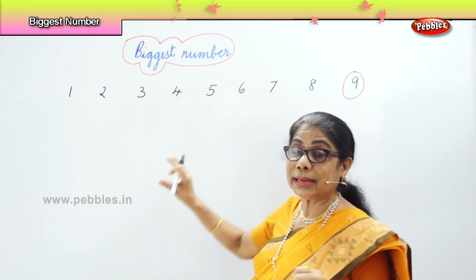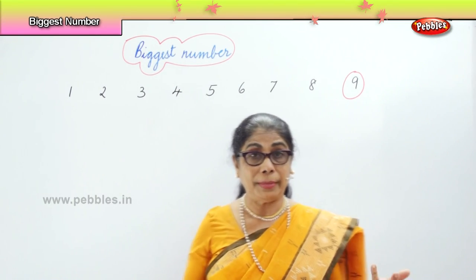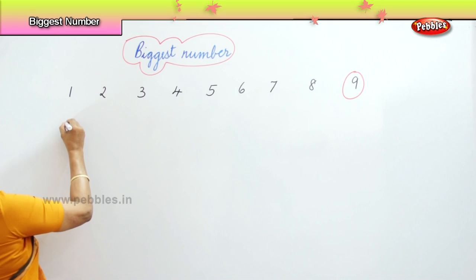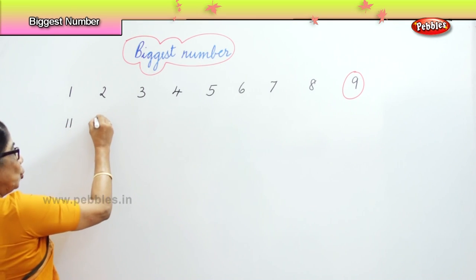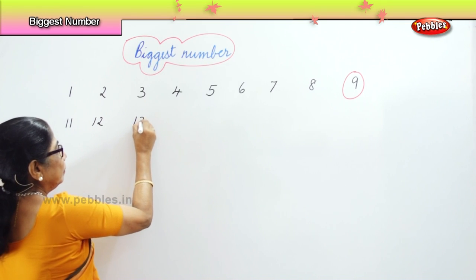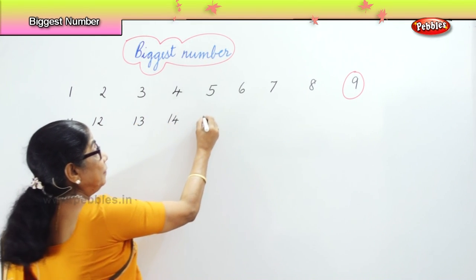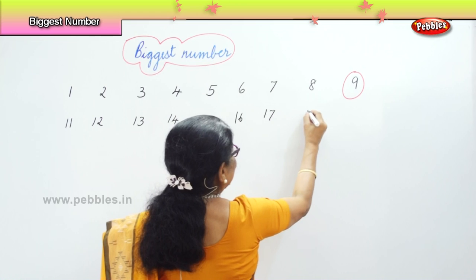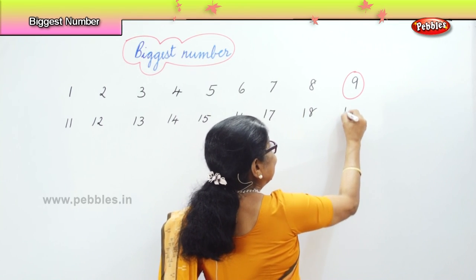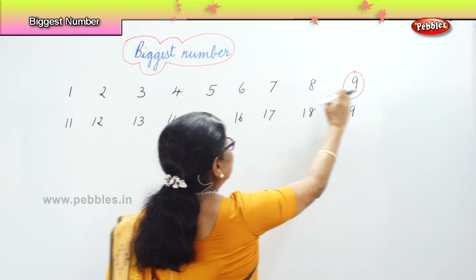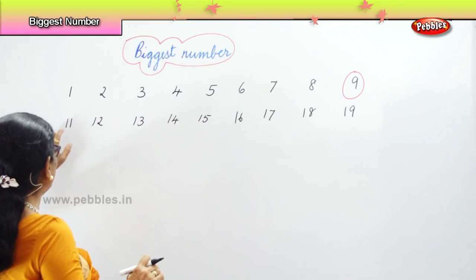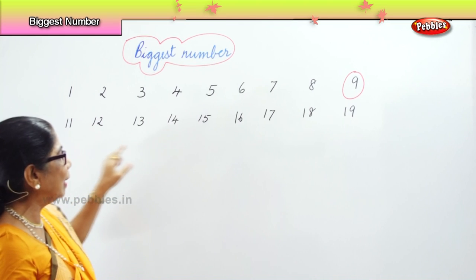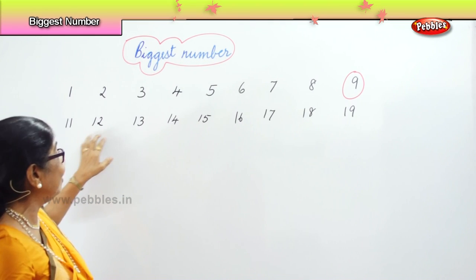Now we have two numbers together. When we say ten, then we have eleven, twelve, thirteen, fourteen, fifteen, sixteen, seventeen, eighteen, and nineteen. First we had all single digits; now we have two numbers — one and one, one and two, one and three, and so on. We call them eleven, twelve, thirteen, fourteen, fifteen.